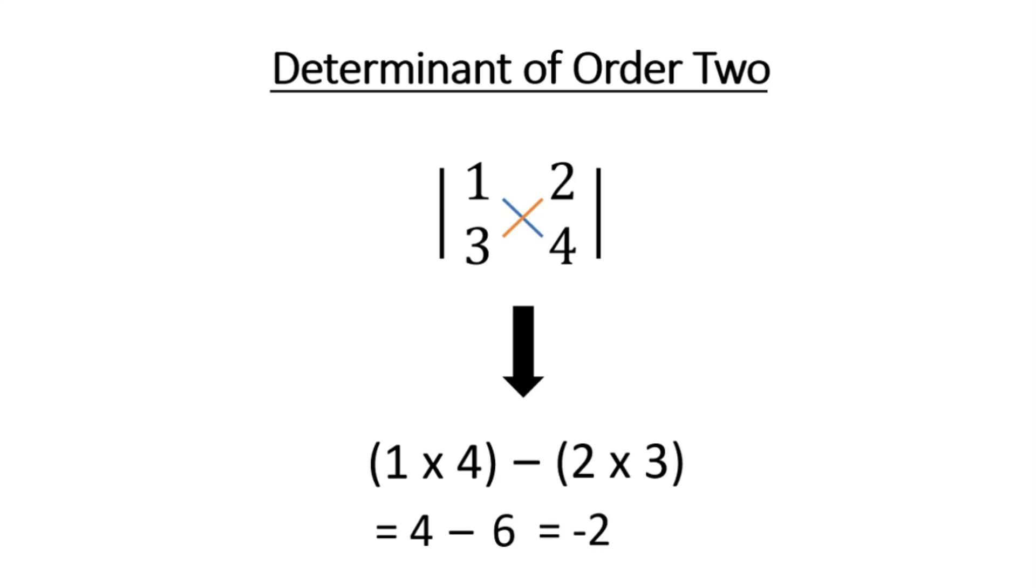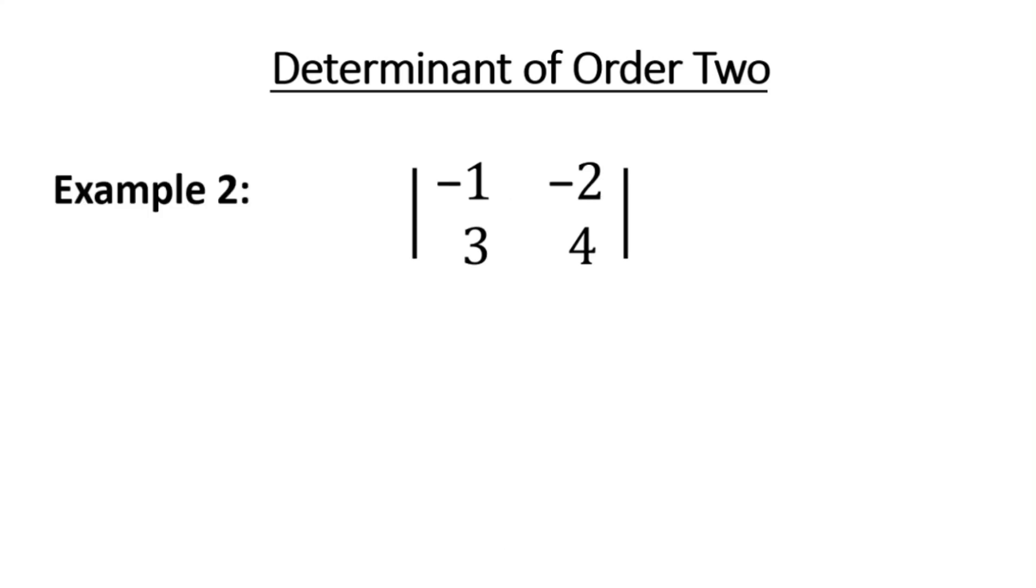minus 2. Now let's try to understand with the help of another example. Again we will take product of diagonal elements from left to right, that is minus 1 into 4 minus minus 2 into 3. Minus 1 into 4